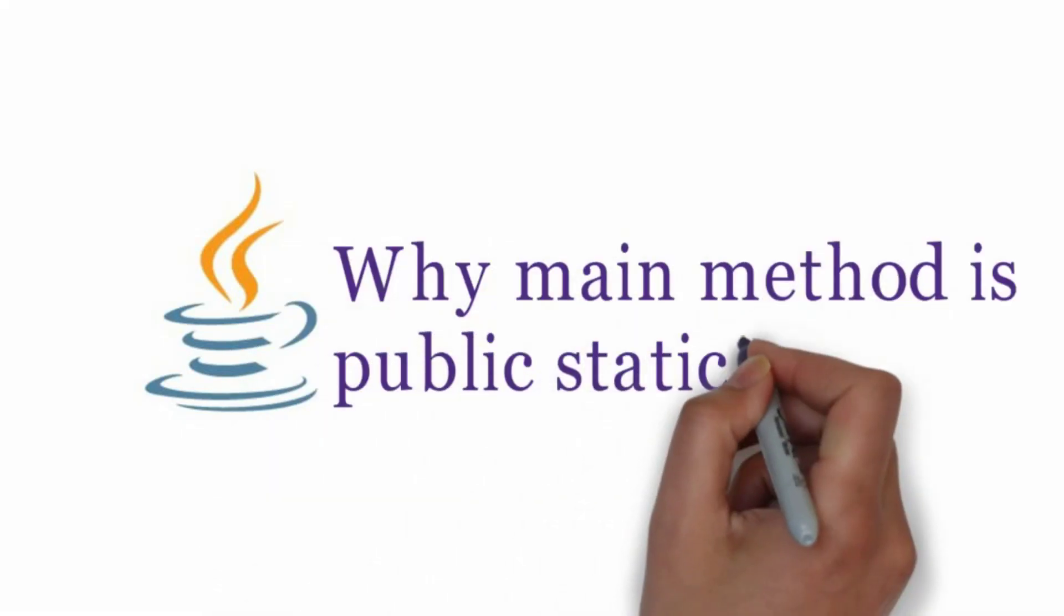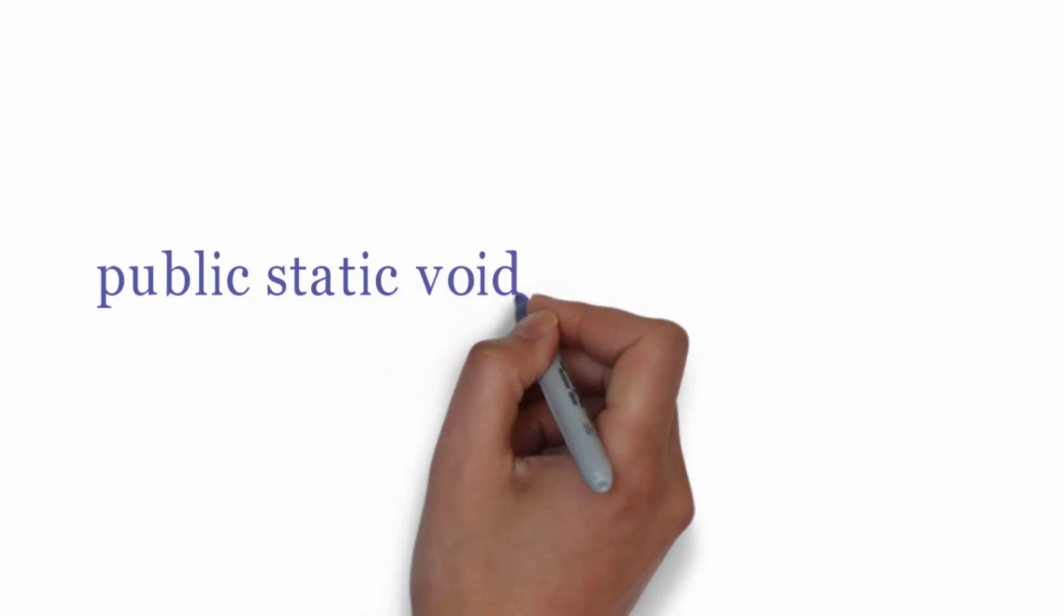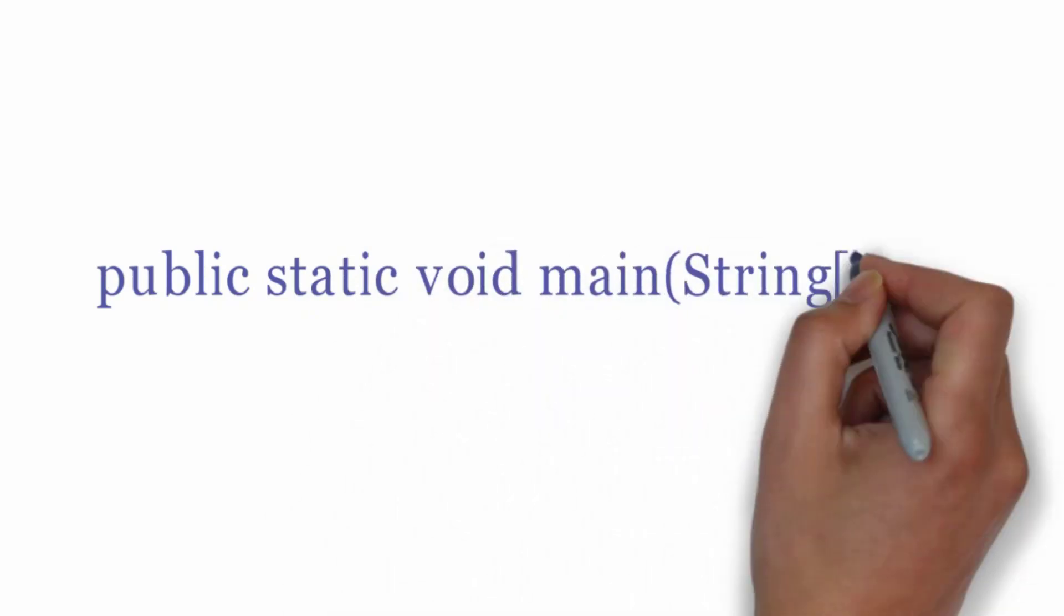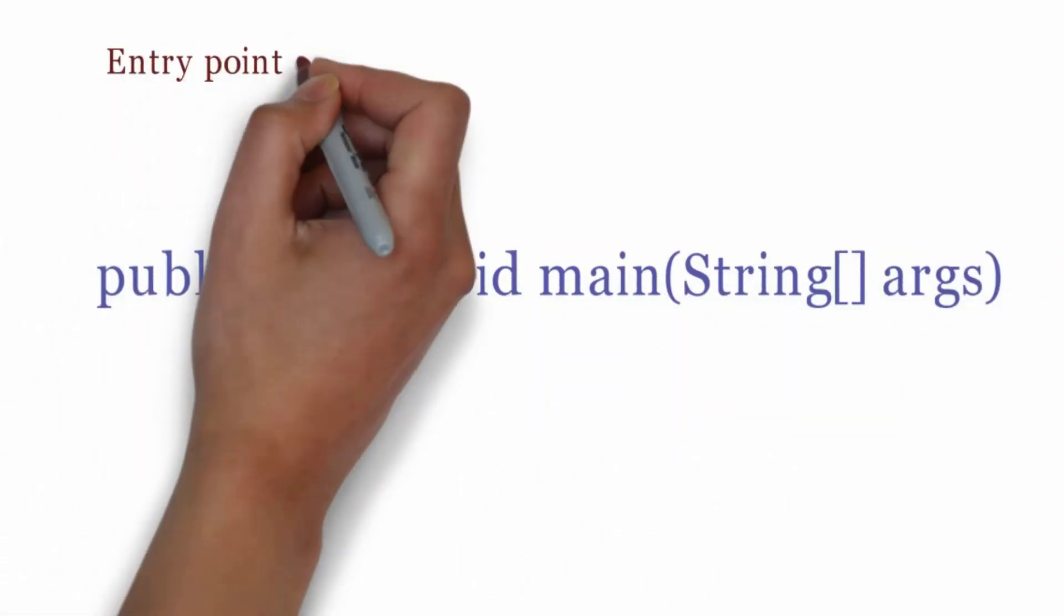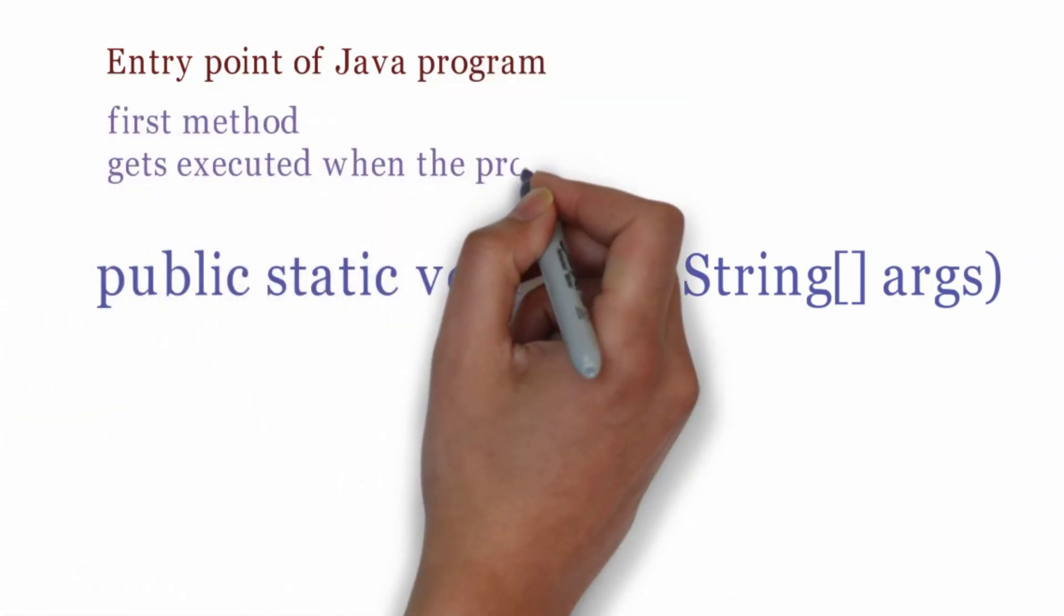Why main method is public static? Public static void main string arguments - this is the syntax of main method. Main method is an entry point of Java program. It is the first method that gets executed when program starts running.